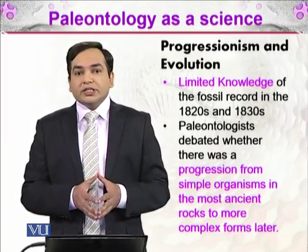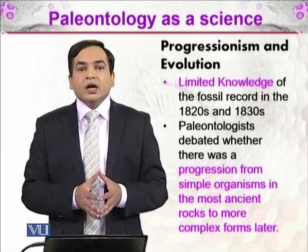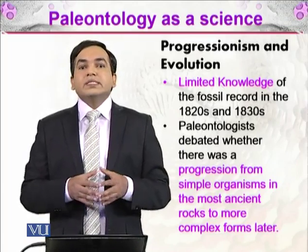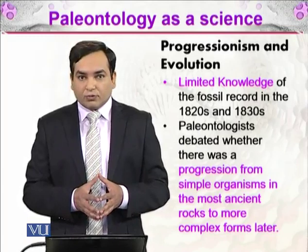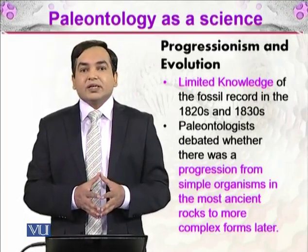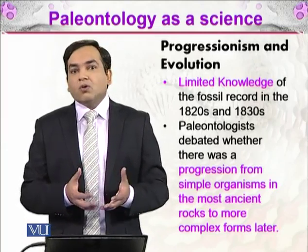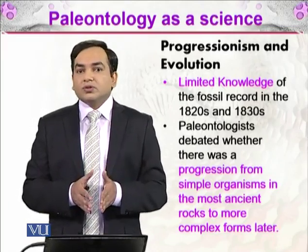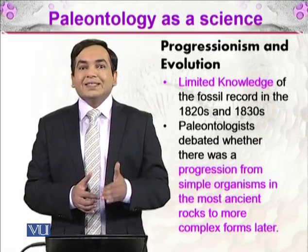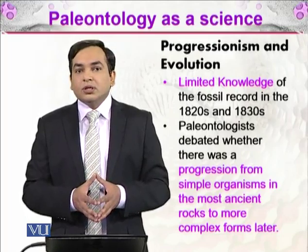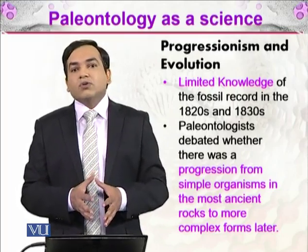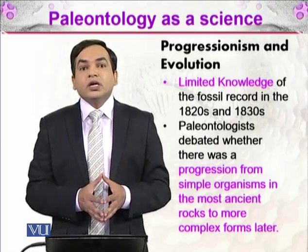In the early 19th century, just like in the 1820s and 1830s, there was limited knowledge available about fossils, and scientists were not able to comprehend how simple life forms evolved into complex life forms. At that time, some scientists were proponents of progressionism. As the name indicates, progress means something evolves from simple to complex, from lower to higher. The scientists who believed that earlier life forms were simple and that life forms evolved to become complex in later stages of time were called progressionists.